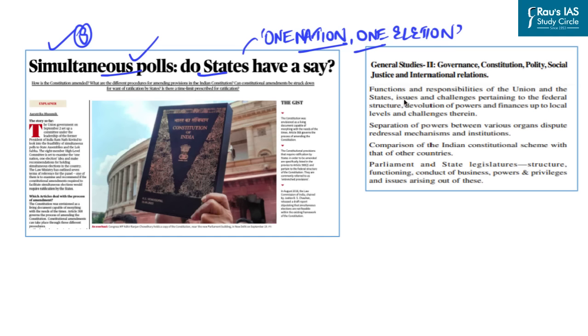Simultaneous elections in India is quite important from the perspective of GS paper 2. Why? Because it involves government reforms, constitutional aspects, federalism, political parties and electoral reforms among others. Its connection with multiple themes makes it quite important from the UPSC perspective. Now let's first understand what is simultaneous elections.